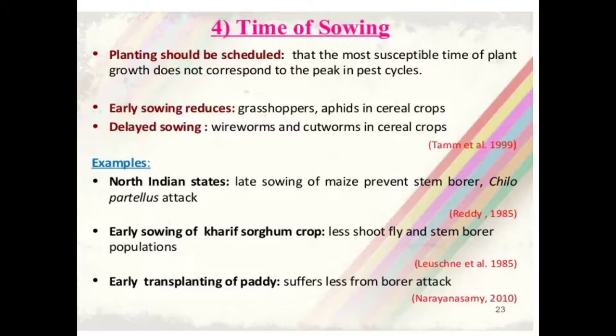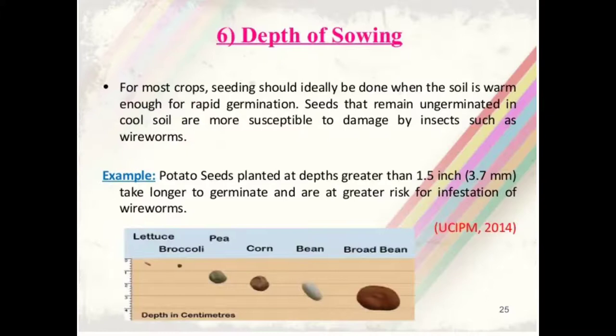The next cultural practice is time of sowing. Planting should be scheduled so that the most susceptible period of plant growth does not correspond to the peak in the pest cycle. Early sowing reduces grasshopper and aphid incidence in cereal crops, while delayed sowing reduces wireworm and cutworm damage. In north Indian states, late sowing of maize prevents stem borer and Chilo partellus attack. Early sowing of kharif sorghum reduces shootfly and stem borer populations, and early transplanting of paddy suffers less from borer attack.